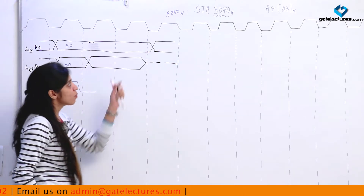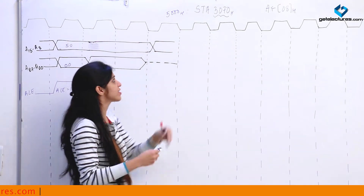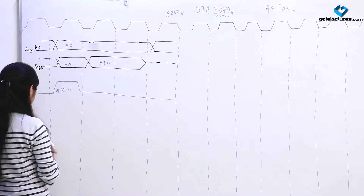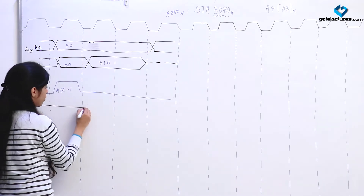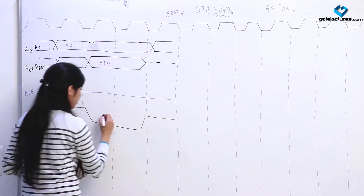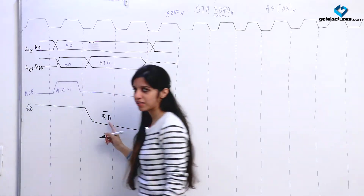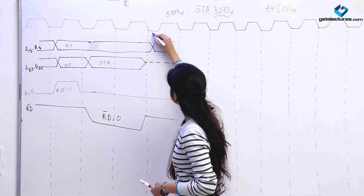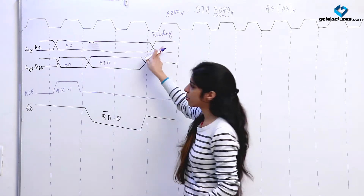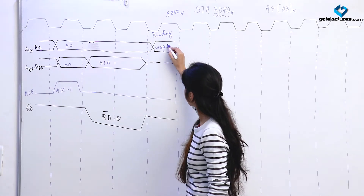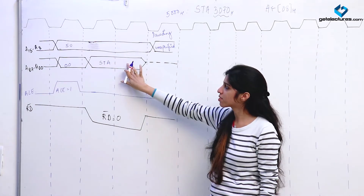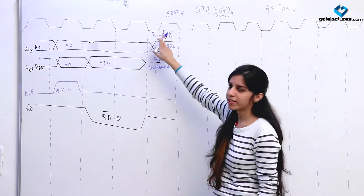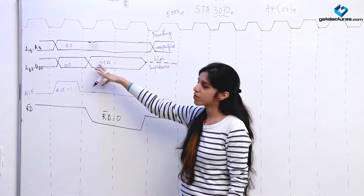Now, what data is it going to get? At address 5000 we have the opcode for STA. So STA opcode is going to come onto the data bus. ALE is low, and to read this instruction from memory we are going to assert read bar — since read is active low, we are going to make it 0 for these two clock pulses. Now we have fetched the instruction STA, and this is the decoding cycle. The contents of the address bus are unspecified and the data bus is made high impedance.